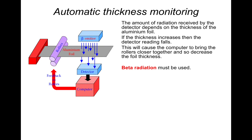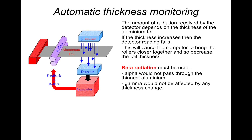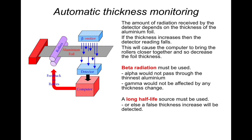Beta radiation must be used for thickness monitoring. Alpha radiation cannot be used because it would not pass through the aluminium foil at all. Gamma radiation cannot be used because, no matter how thick the aluminium foil, the gamma radiation would just pass straight through. So alpha will not pass through, and gamma will not be affected by thickness change. A long half-life source must also be used - typically approximately 500 years - so the source doesn't stop working within hours and need replacing.